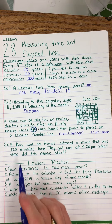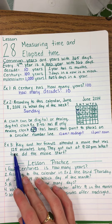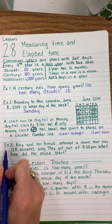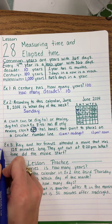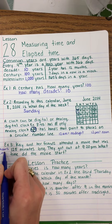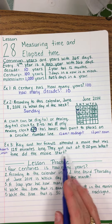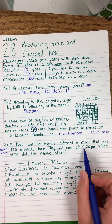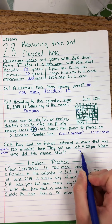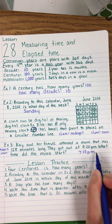Example three. Kay and her friends attend a movie that was 125 minutes long. 125 minutes is how many hours? There are 60 minutes in an hour, and 60 plus 60 is 120, so that's two hours and five minutes. They got out of the movie at 9:20 p.m. What time did the movie start? We go back two hours — 9, 8, 7 — and then go back five minutes from 20. So 7:15 p.m. is when the movie started.